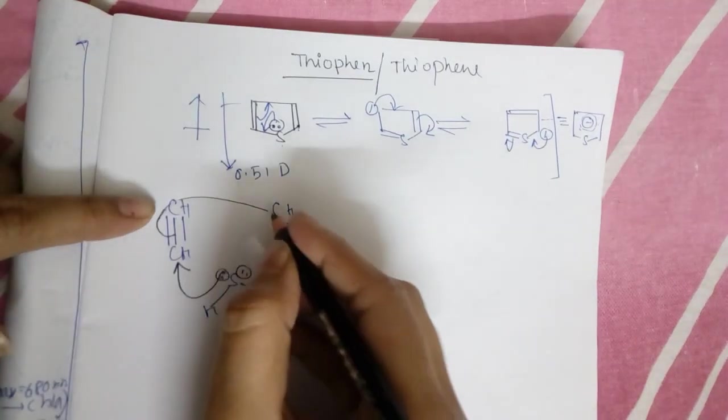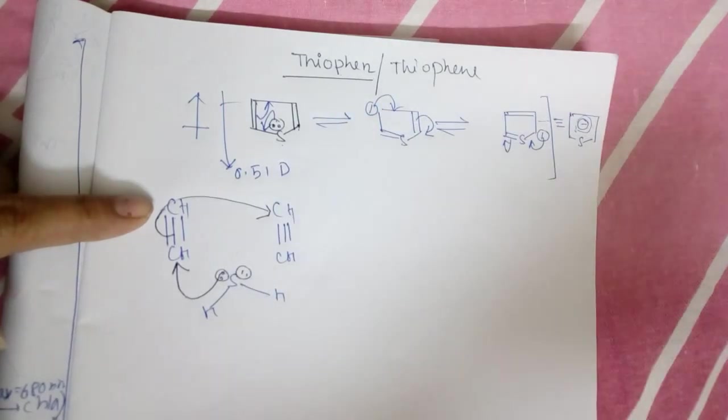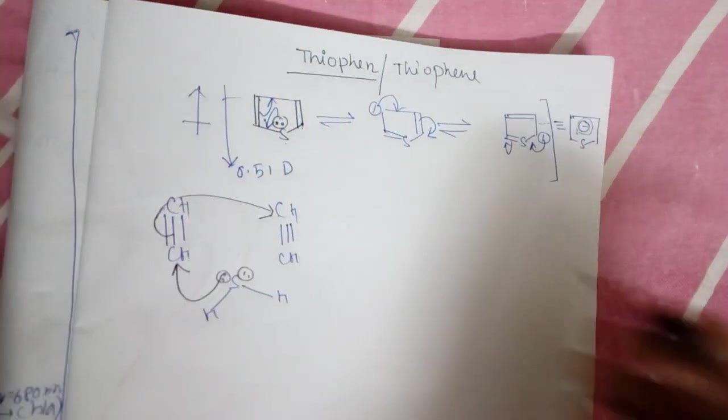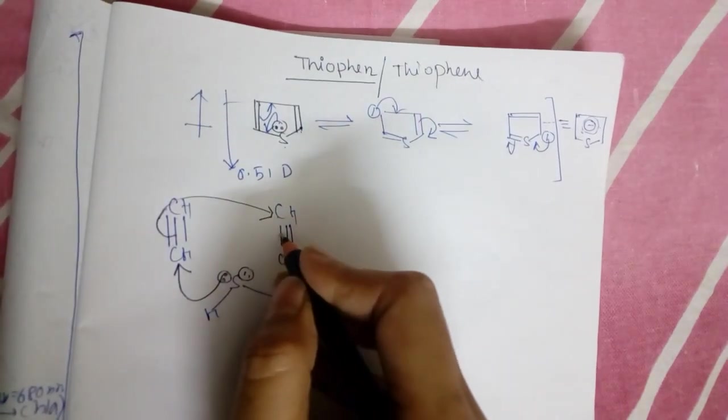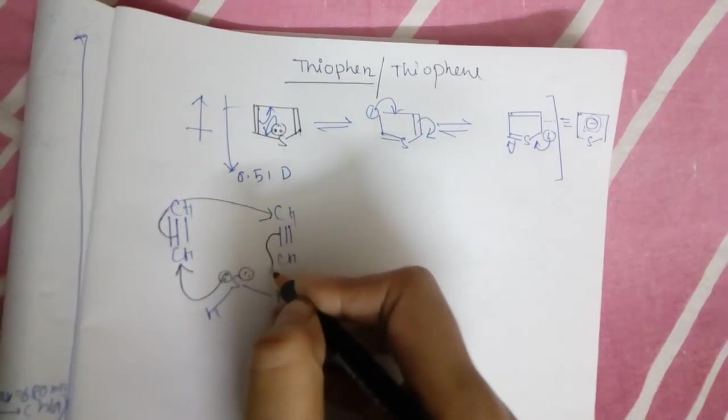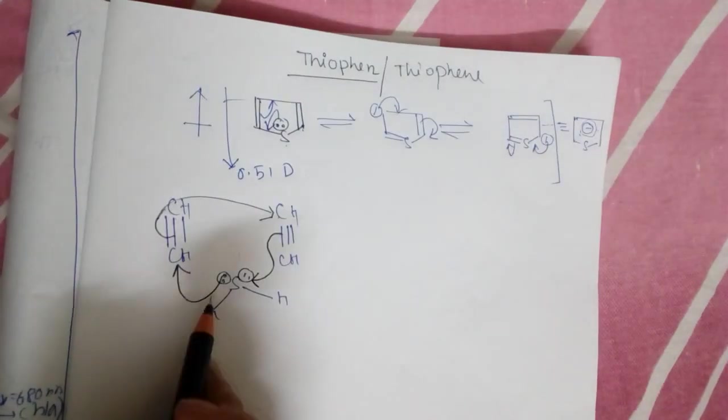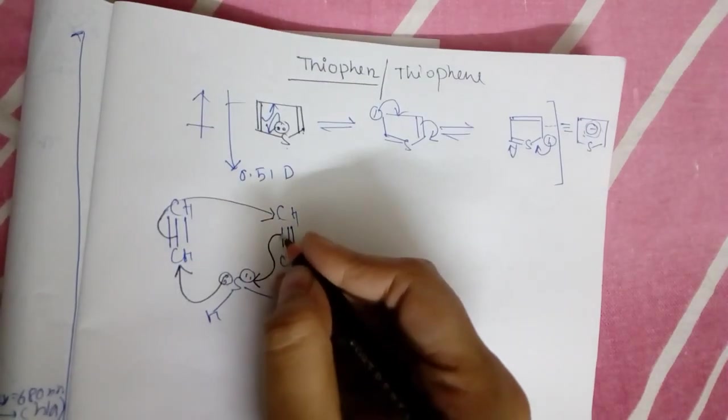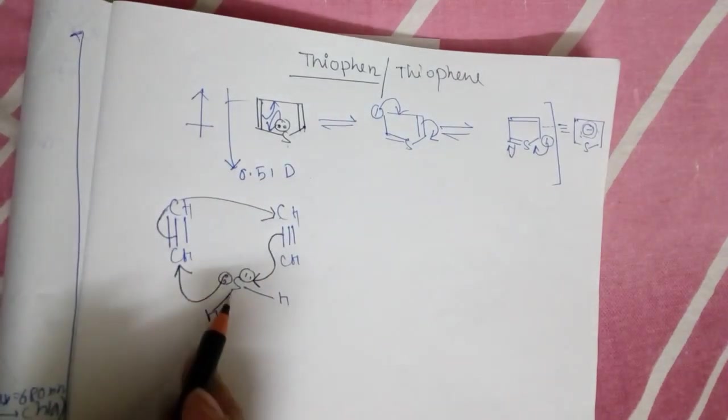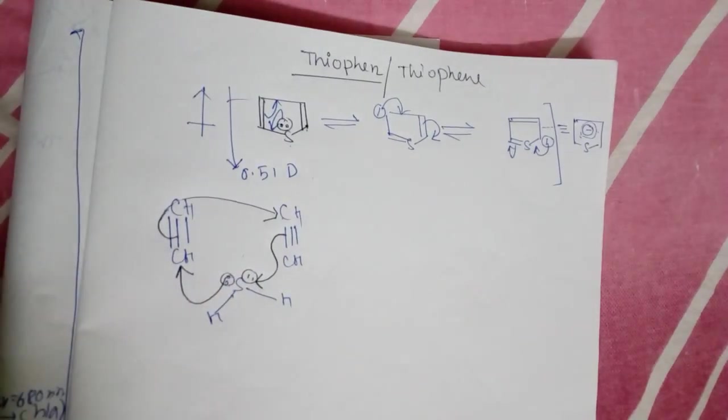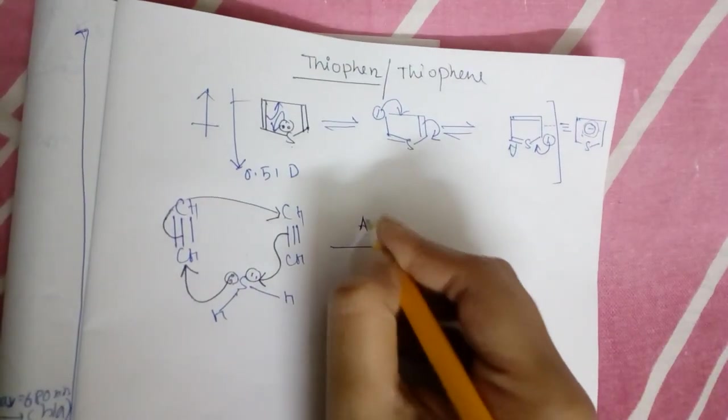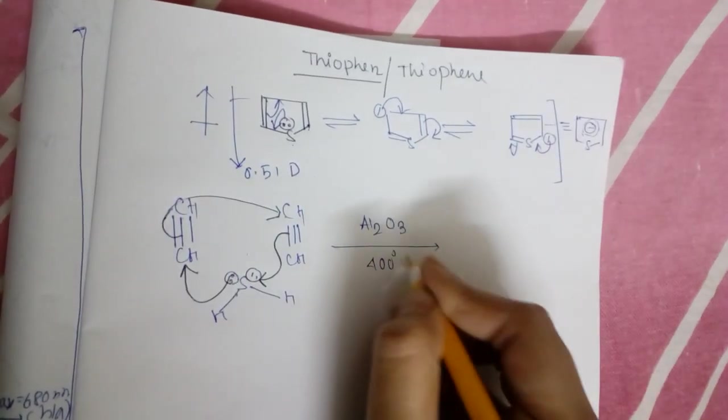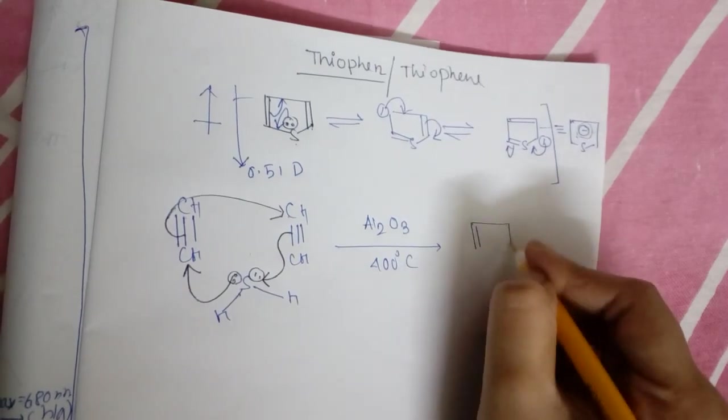Then this bond will rotate towards this carbon and the negative charge arises upon this carbon. This negative charge will attack another carbon of the another acetylene group, and here electron is rich. Due to this effect, this bond will again rotate and attack the sulfur. Due to donation of its one lone pair, positive charge generates upon sulfur. Then by rotation of this bond, the positive charge upon sulfur is neutralized.